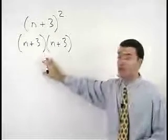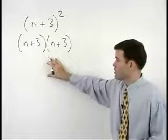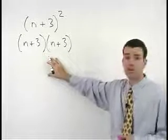So we really have two binomials that are multiplying together, and to simplify this problem we must use the FOIL method.